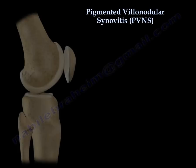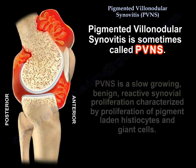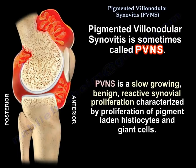Pigmented villonodular synovitis, sometimes called PVNS, is a slow-growing, benign, reactive synovial proliferation characterized by proliferation of pigment-laden histiocytes and giant cells.